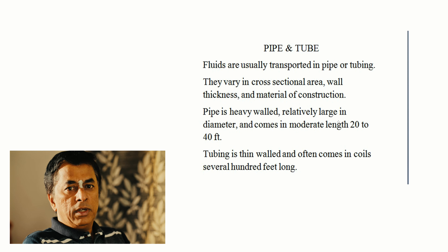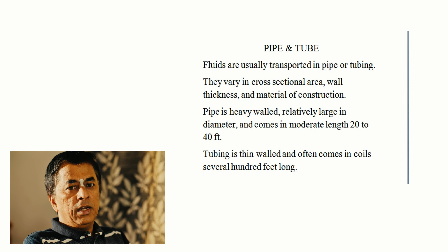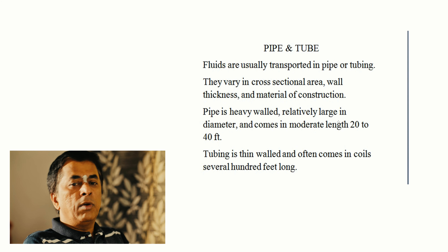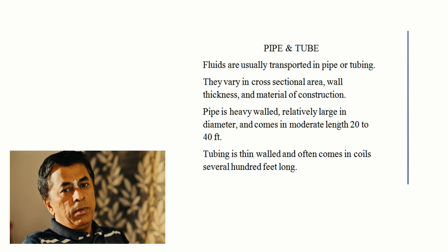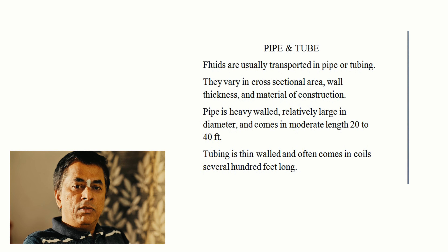If the cross-sectional area is square, it is called a conduit. If it is circular, it is called a pipe or tube. Fluids are transported in pipes or tubing, which vary in cross-sectional area, wall thickness, and material of construction. For example, a pipe with an internal diameter of 2 inches will transport more material than one with a 1-inch diameter.